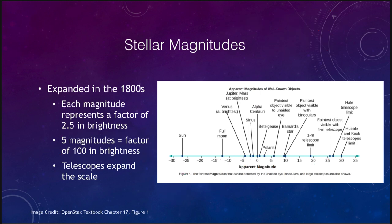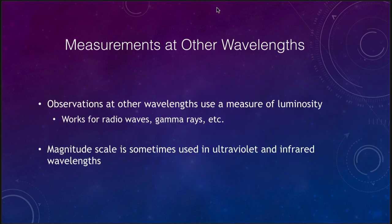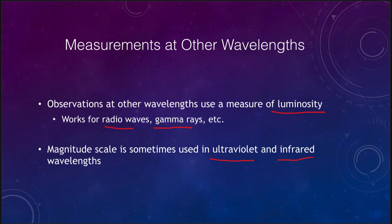How about other wavelengths? Typically, other wavelengths such as radio waves and gamma rays use luminosity instead of magnitudes. The magnitude scale is used for ultraviolet and infrared wavelengths in some cases, especially when those are very close to visible light. Radio astronomers, gamma-ray astronomers, and X-ray astronomers do not convert things to magnitudes, but instead use measures of luminosity — or at least of apparent luminosity — how bright the objects appear to be from Earth.